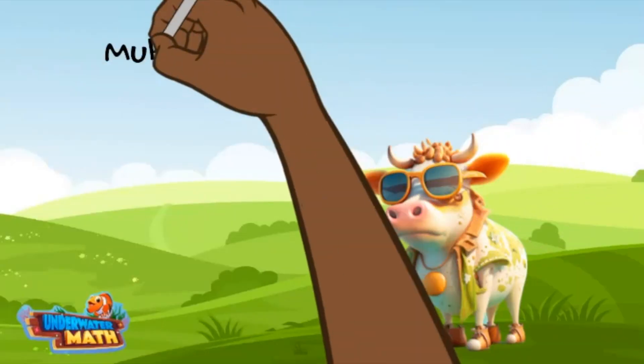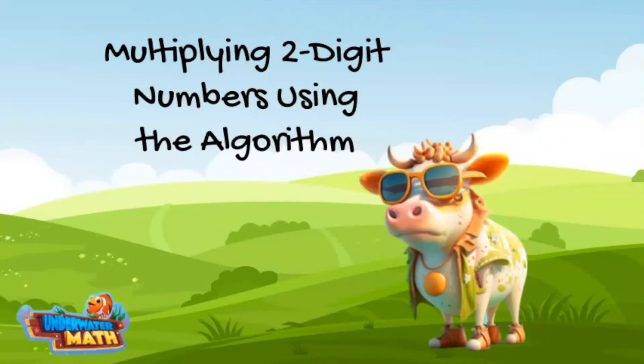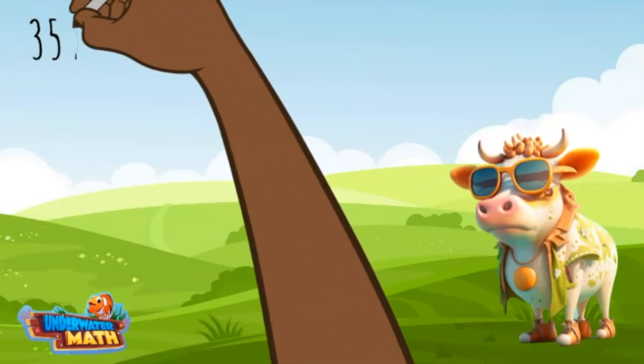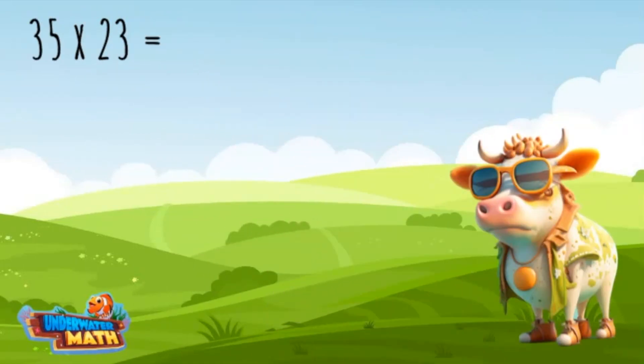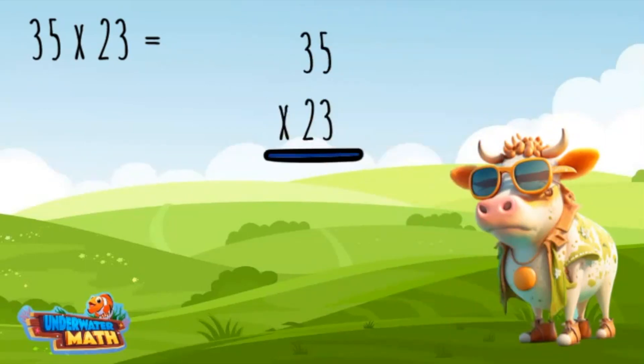Who's in the mood to multiply two-digit numbers using the algorithm? Well, let's go! Here is the problem for today: 35 times 23. When using the standard algorithm, stack the numbers on top of one another. When multiplying, you are going to make a bow tie with the numbers.